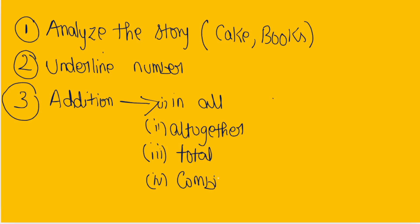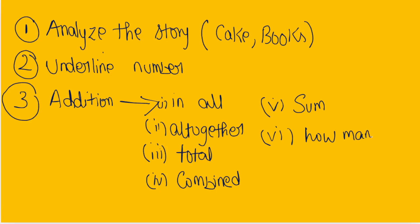The fifth clue word is 'sum,' and the last one is 'how many.' These are the six clue words which mean you have to do addition for the problem. If you see 'in all,' 'all together,' 'total,' 'combined,' 'sum,' or 'how many,' directly add the numbers. This is the third step.